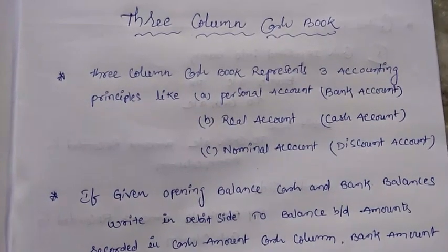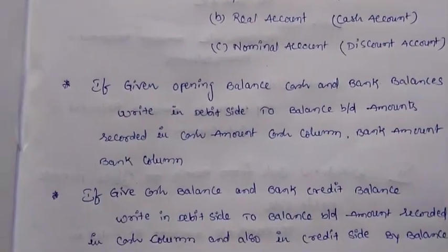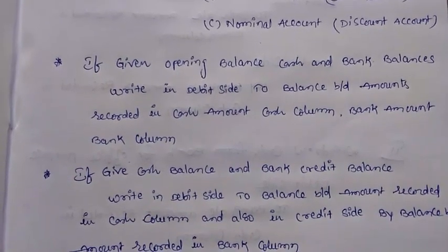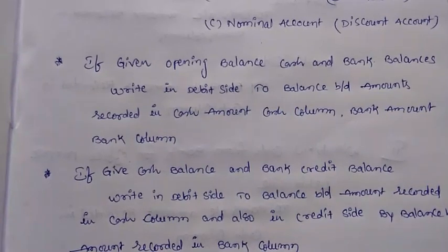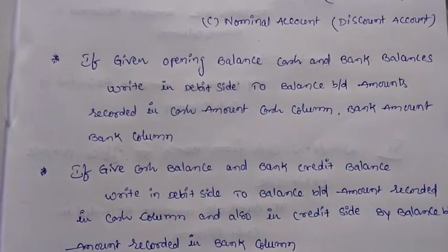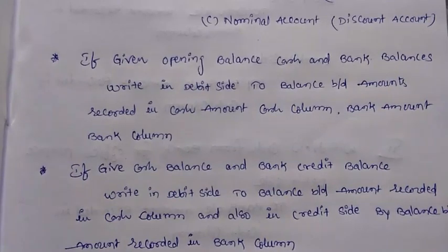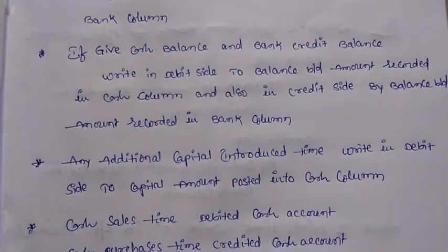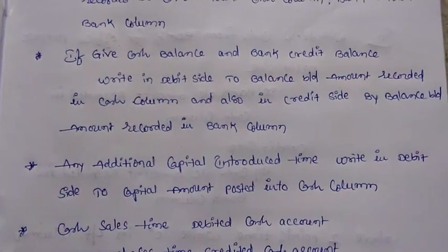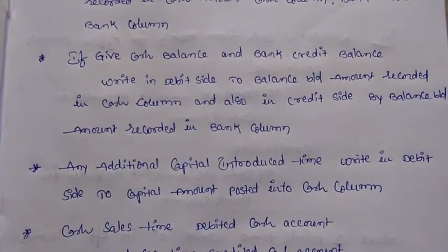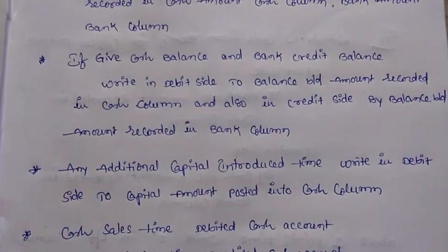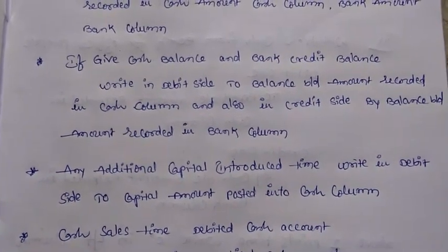Some important instructions: if given opening balance with cash and bank balances, we write on the debit side 'To Balance Brought Down'. The amounts are recorded in the cash column and bank column respectively. If given cash balance and bank credit balance, write on the debit side 'To Balance Brought Down' — that amount recorded in the cash column.